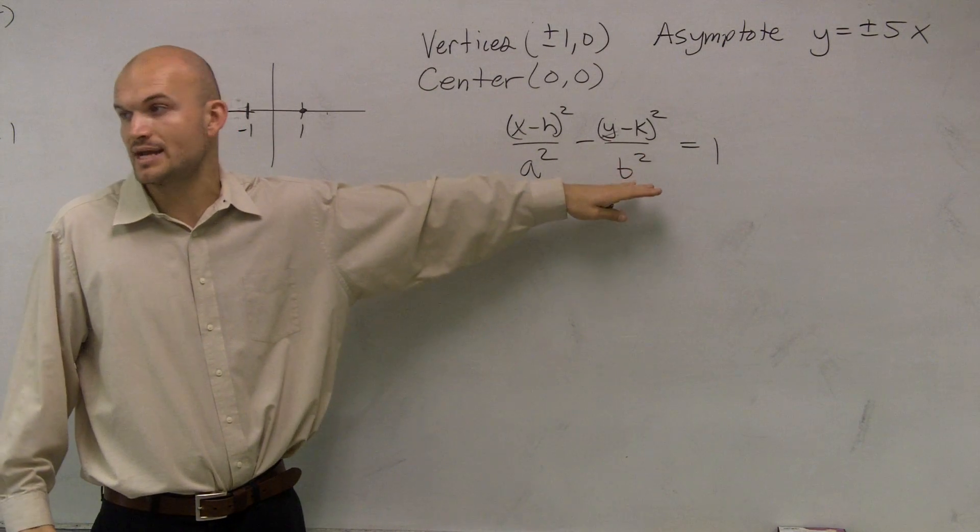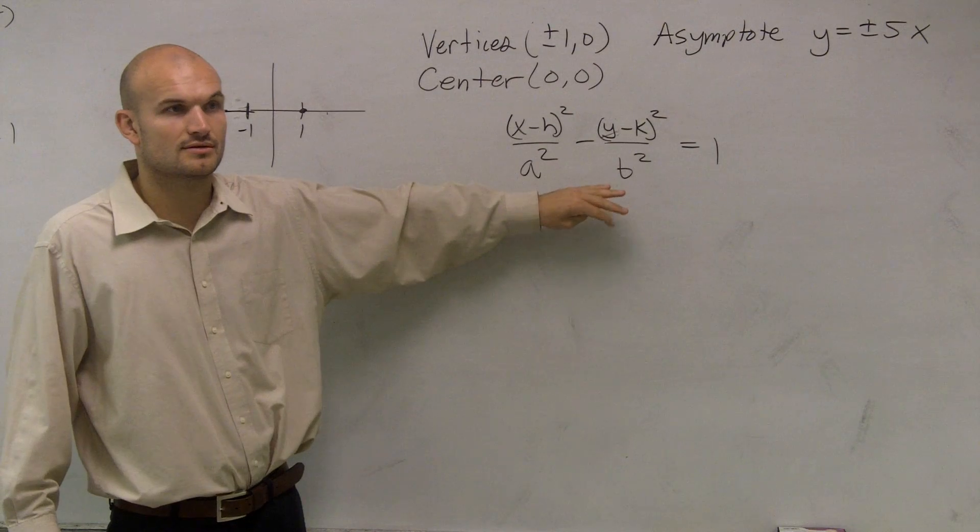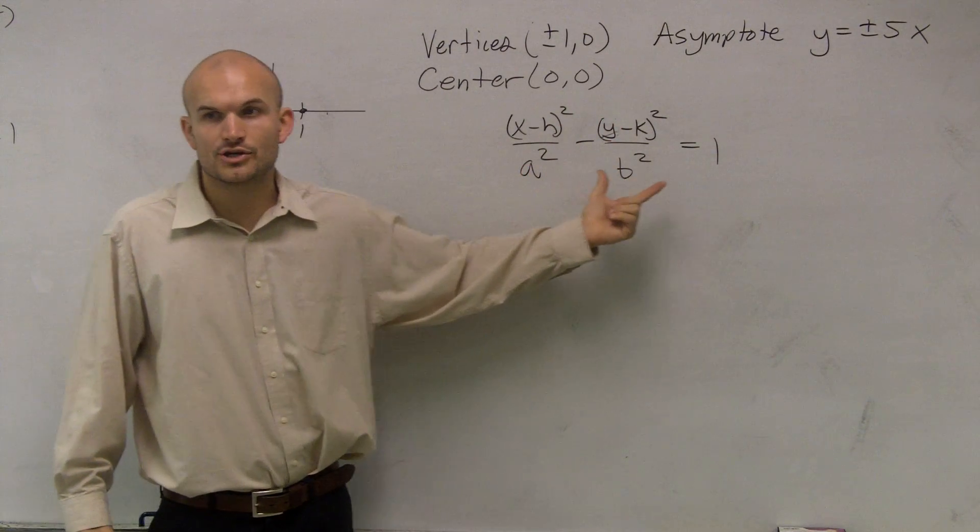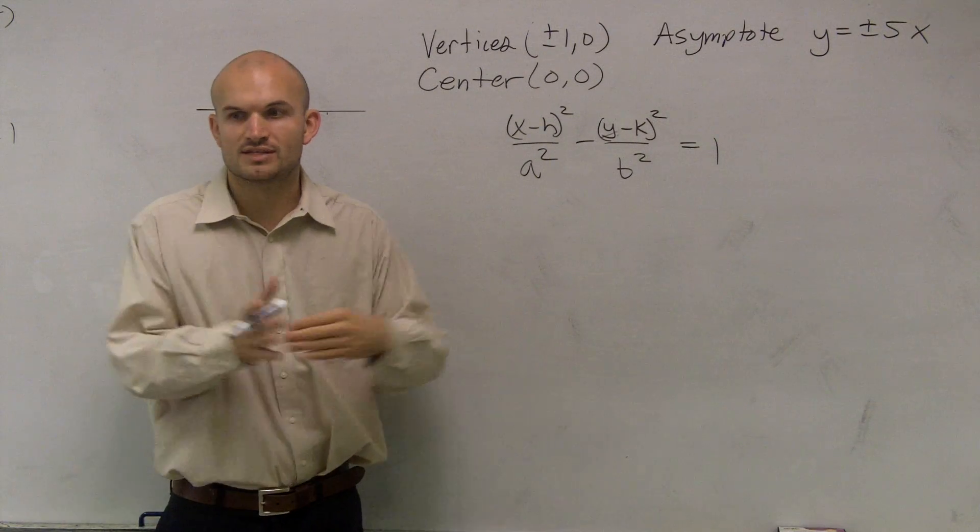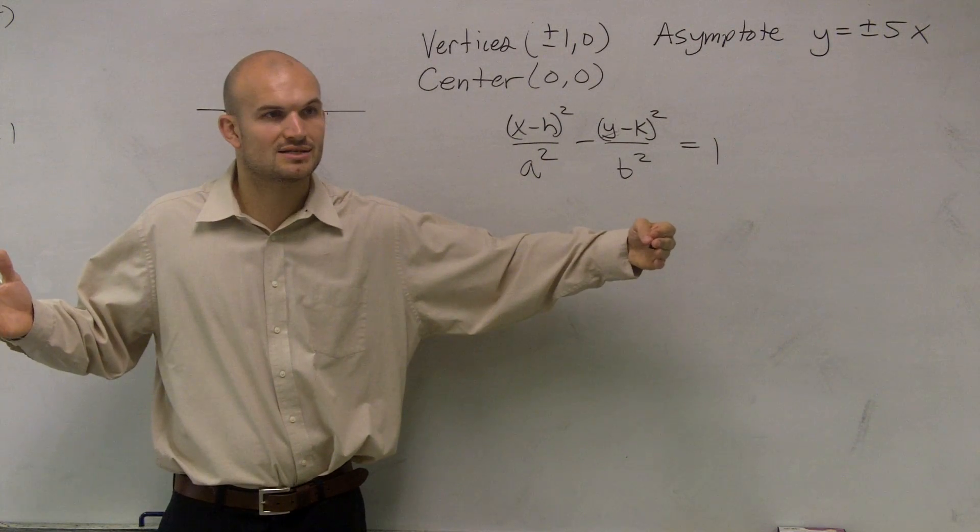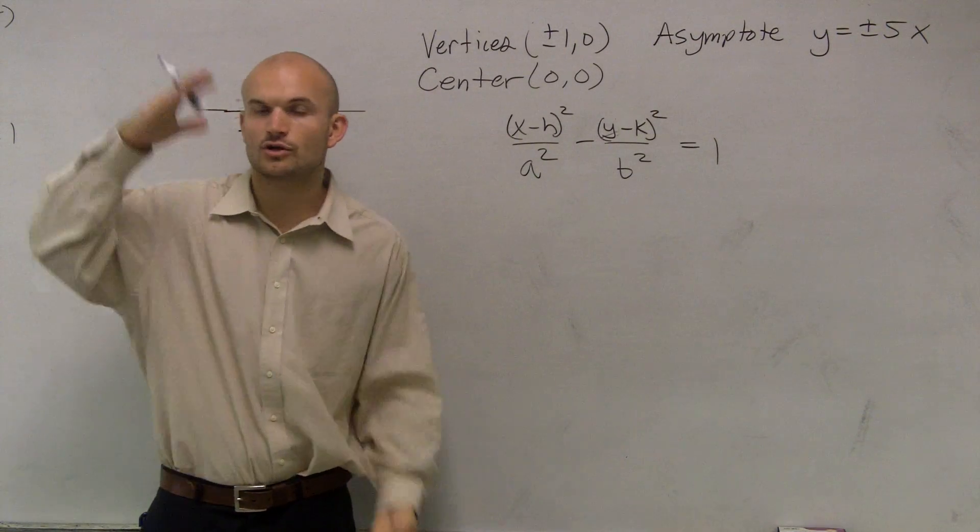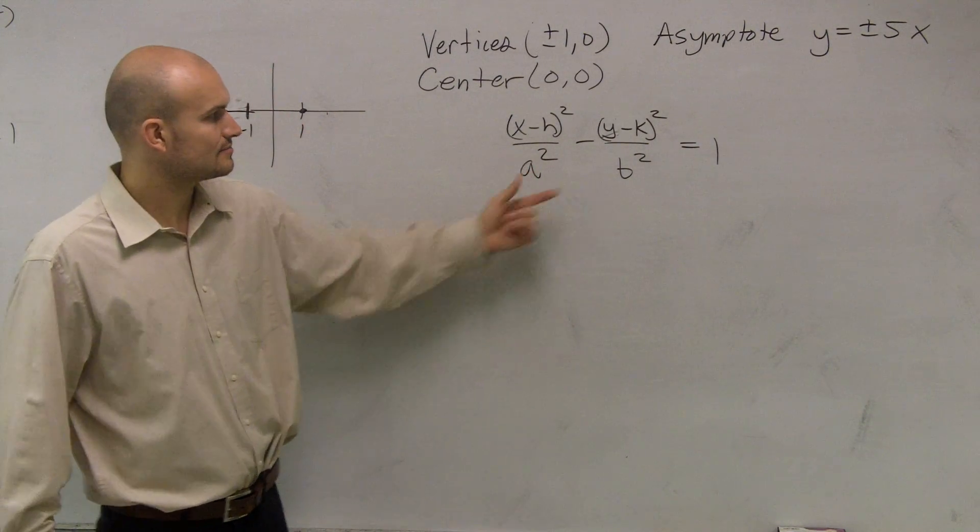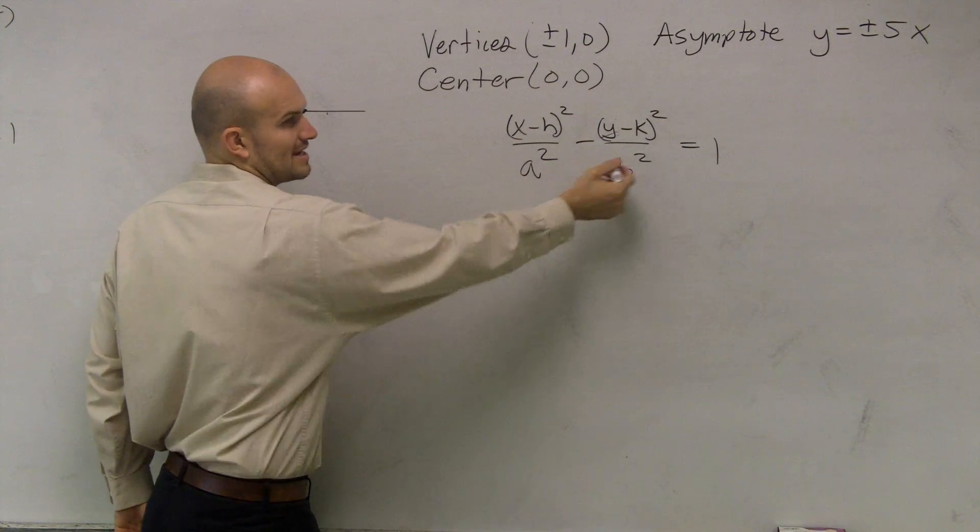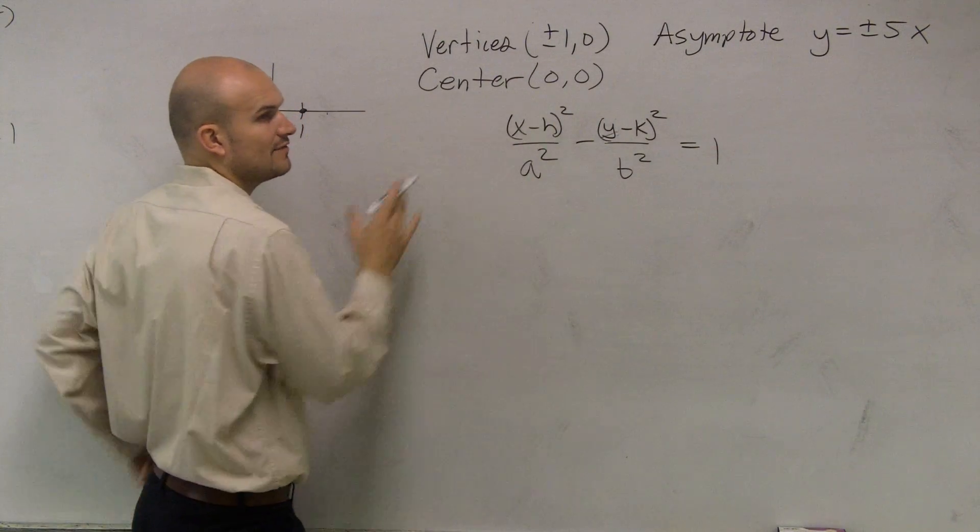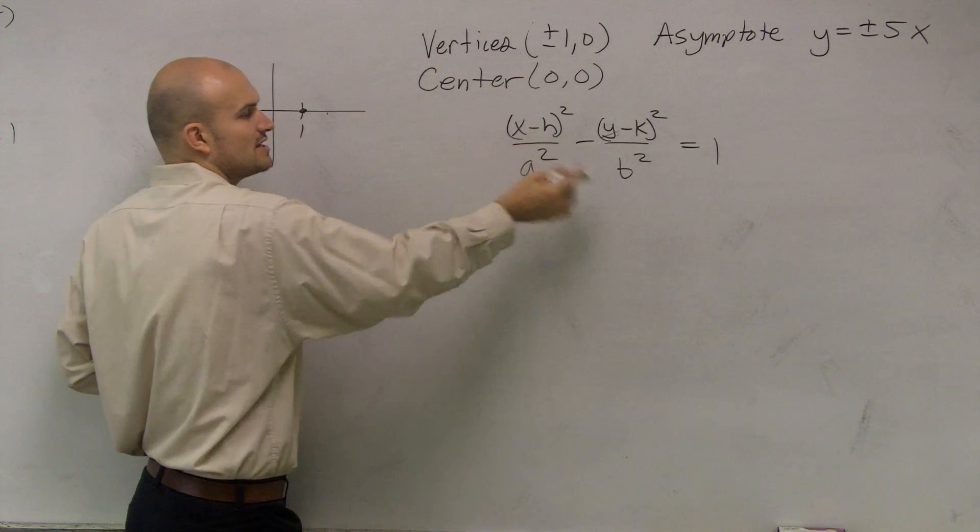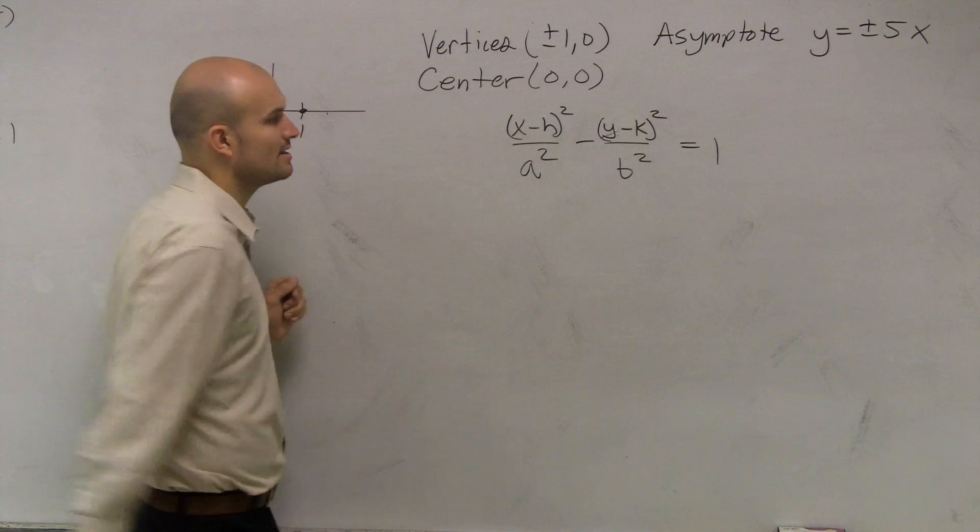Okay? For your ellipses, we always had the a² under whatever it was. If it was a horizontal major axis, then it was under the x. If it was a vertical major axis, the a was under the y. Well here, your a is always going to be a² minus b². And determining if it's going to be opened up horizontally, you'll have your x first. And if it's opened up vertically, you'll have your y first.